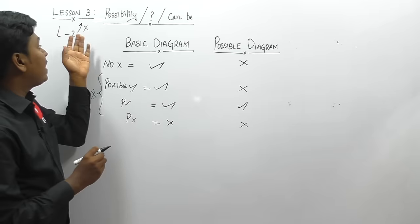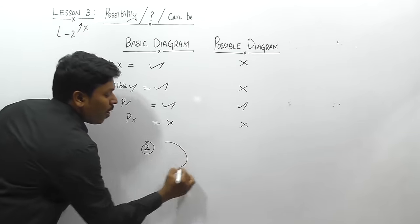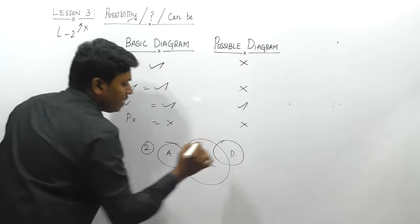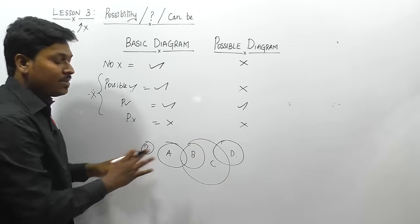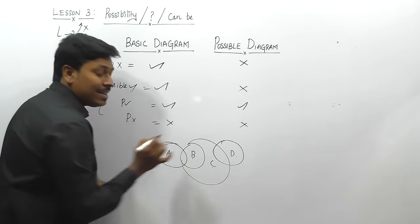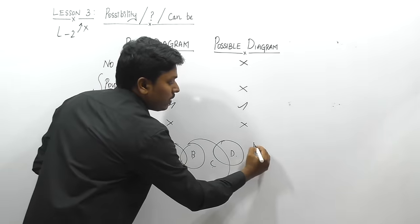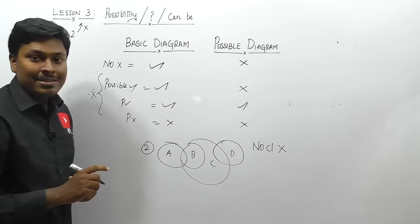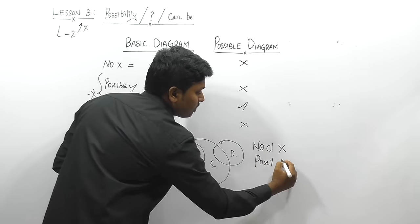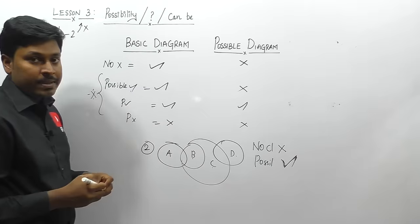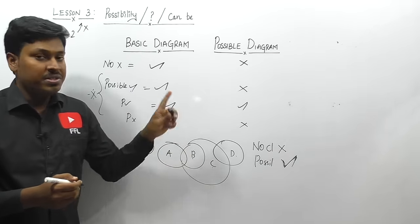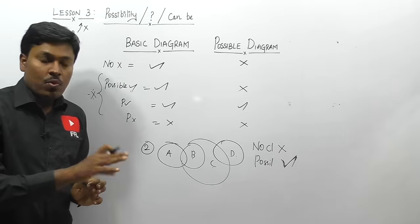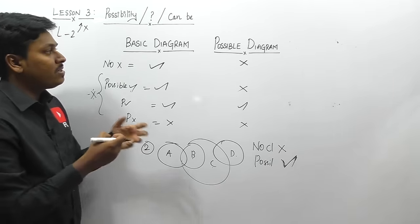Another important note from lesson two: if all the parameters are inside a single Venn diagram, 'no' conclusion is always wrong. In lesson three, if all the parameters are inside a single Venn diagram, possibility is always true. So lesson two and lesson three are opposites — if all parameters are in a single Venn diagram, no conclusion is false, but possibility conclusion is true.